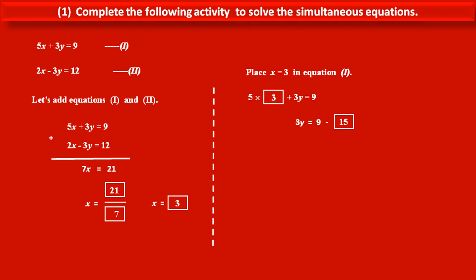Therefore, solving this, we get 3y is equal to... 5 times 3 is 15. We have to shift 15 to the right hand side. Therefore, solving above, we get 3y is equal to 9 minus 15, that is minus 6.